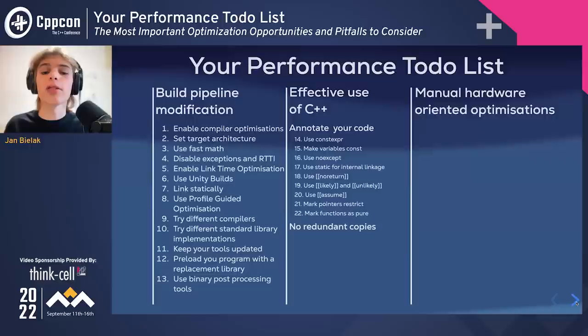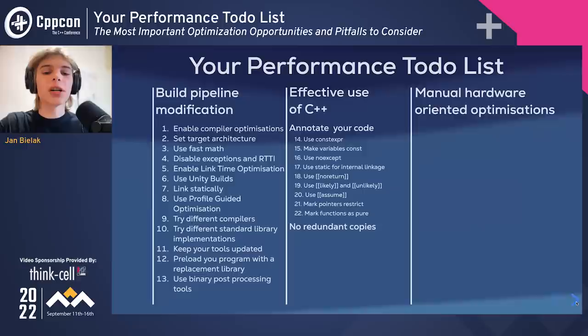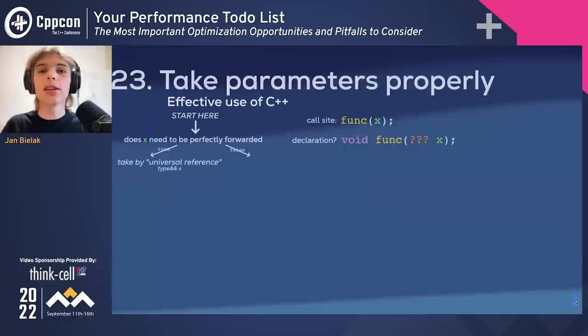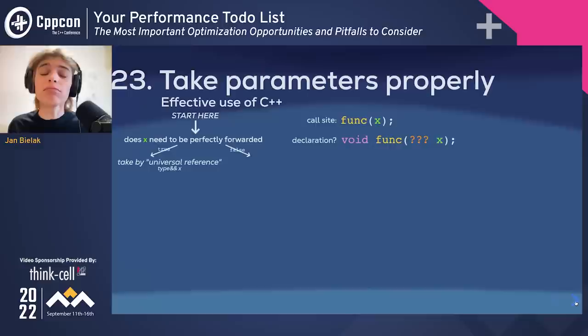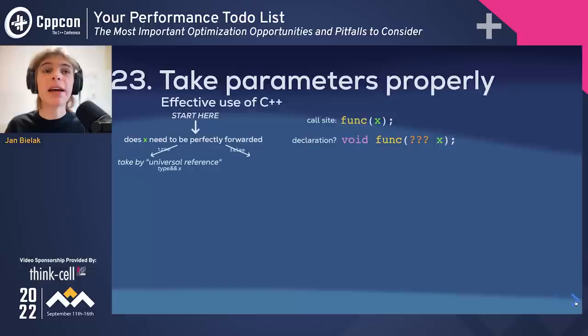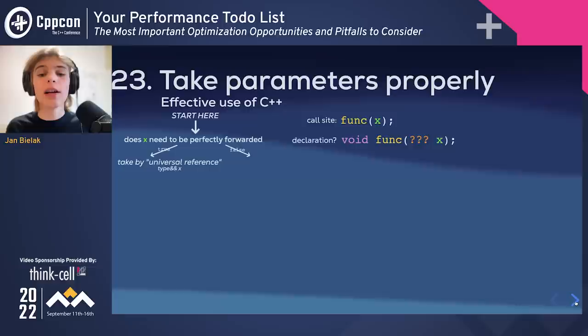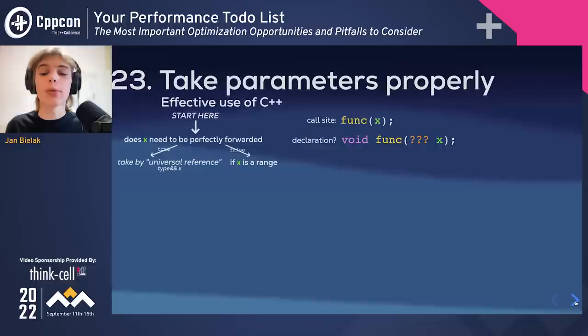Now that we are done with annotations, let's talk about avoiding unnecessary copies — mainly at function boundaries. Here is a rule-of-thumb algorithm for determining how to take parameters. First, if we are writing a function template, think if the parameter should be perfectly forwarded. If not, or if we are not writing a template, assume the parameter is not a range. If the parameter can be null or empty — if there might not be an x — instead of taking an x, take an optional of x; using optional is safer than taking a possibly null pointer.